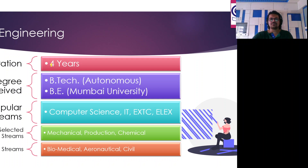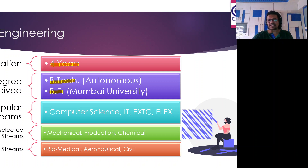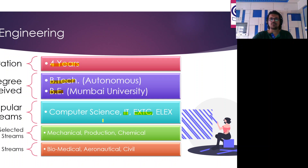You can give MHT CET, JEE, and various other entrance examinations — you have a variety of options. Engineering is a four-year course. By the time you complete 11th and 12th you'll be 18, so 18 plus 4 means at 22 you're done with engineering. If you're doing it from a private autonomous college, your degree will be BTech — Bachelor of Technology. If affiliated to Mumbai University, you'll get BE — Bachelor of Engineering.